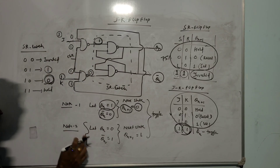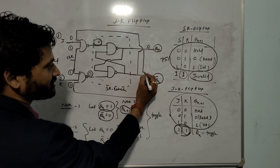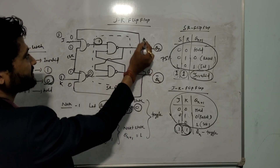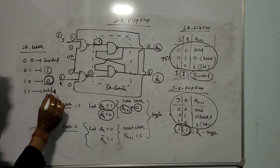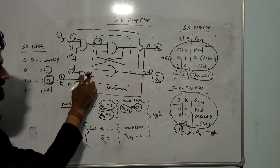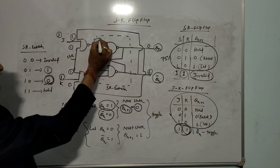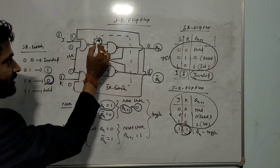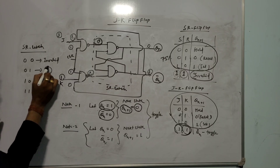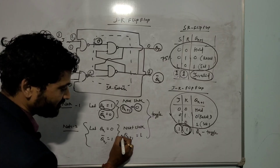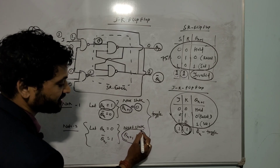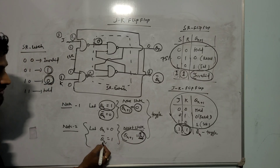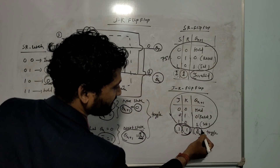Let Q(N)=0, so Q(N) bar=1. Now 0 is given to the first NAND gate input. For the first NAND gate, any one input is 0 — output is 1. For the second NAND gate, all inputs are 1 — output is 0. So 0,1 is given to the SR latch. Output is 1. So Q(N+1)=1, which is Q(N) bar — output is Q(N) bar. That is toggle.